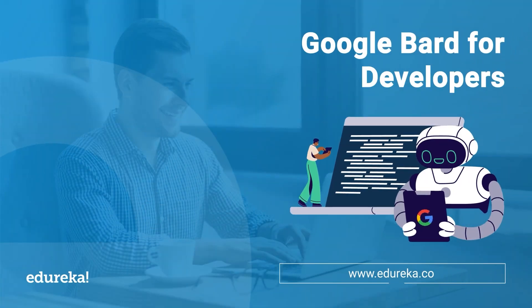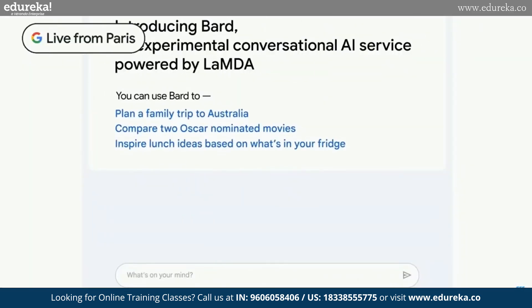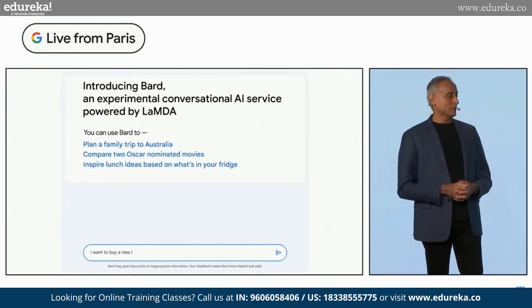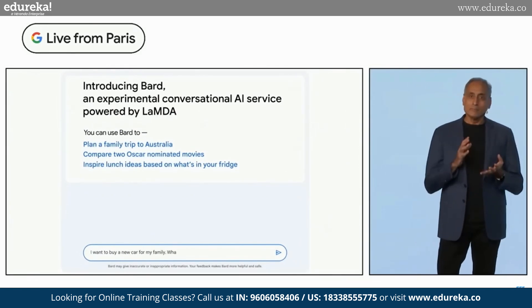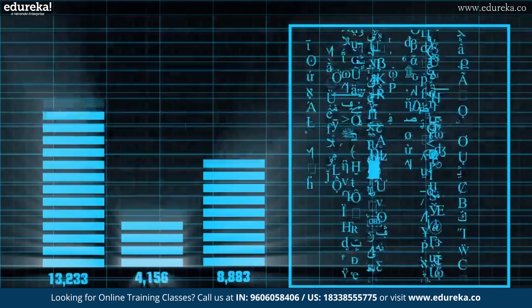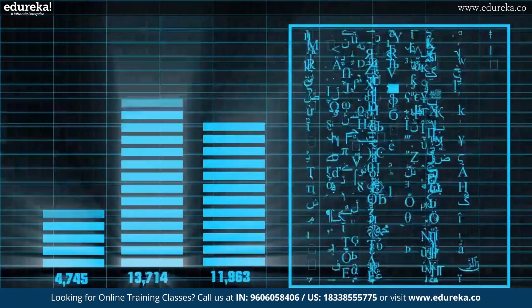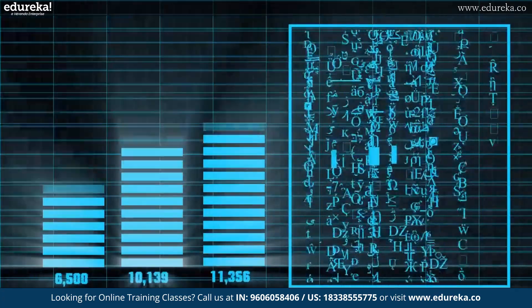Google has released a new update to its AI chatbot BARD, improving the ability to provide summaries of information and tell users where that information has come from, with promises to cover over 40 languages soon across 180 countries.